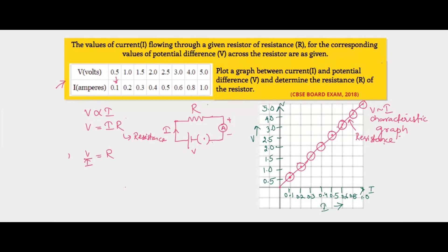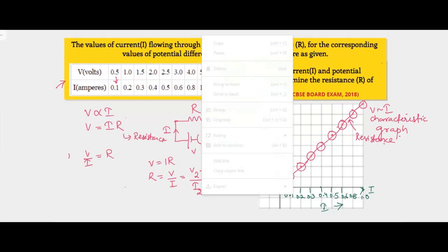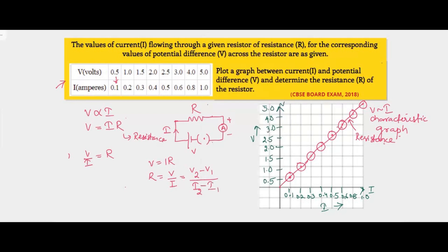For an ohmic conductor, this line will always be a straight line. Now, using this curve, how can we find the resistance? We know that V equals IR from Ohm's Law, so R equals V divided by I. If we find the difference in potential and the corresponding difference in current and divide them, we get the resistance. So we take any two values: (V2 minus V1) divided by (I2 minus I1).